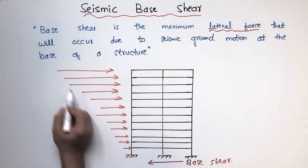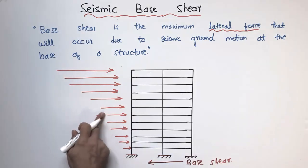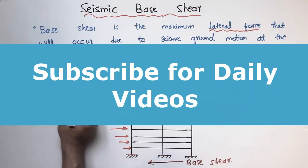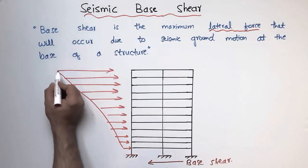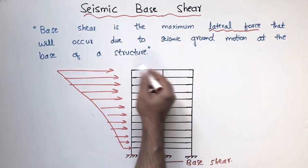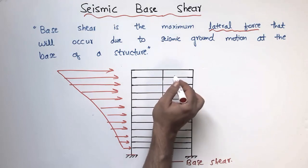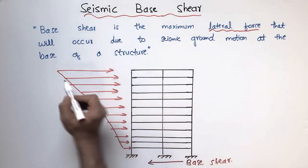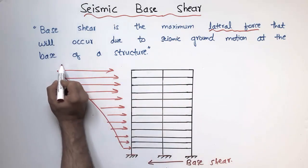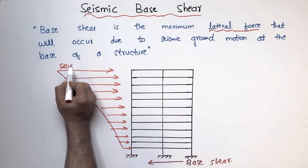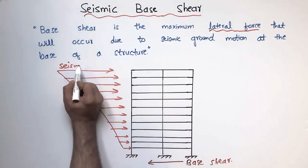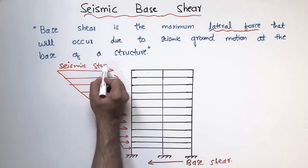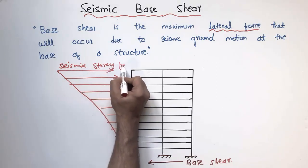The magnitude changes going from the bottom to the top of the building. That's why we need to increase the stiffness of the building at the top, because more lateral force is acting there. These forces are called the seismic story forces.